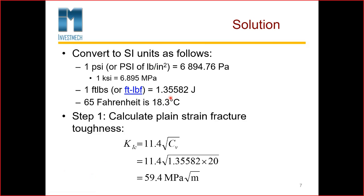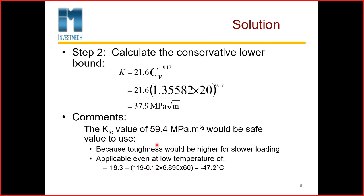First, I like to convert units. 1 KSI is 6.895 MPa. 1 foot-pound is 1.35582 joule. 65 degrees Fahrenheit is 18.3 degrees Celsius. We calculate the plane strain fracture toughness and get 59.4 MPa square root meter. The conservative lower bound is 38 MPa square root meter. The estimated K1C of 59.4 would be safe to use because toughness would be higher for slow loading, applicable even at a low temperature of minus 47.2 degrees Celsius for this material.